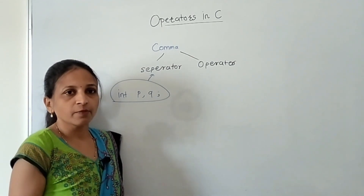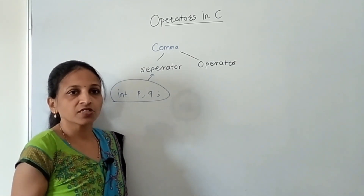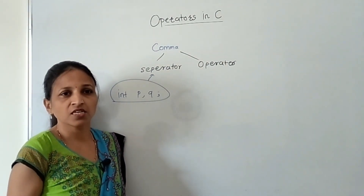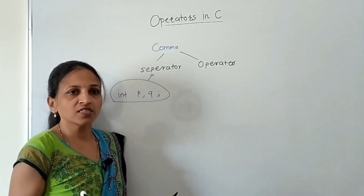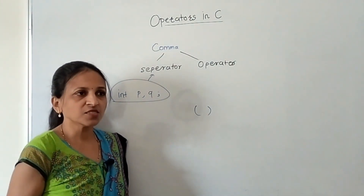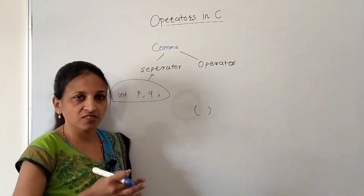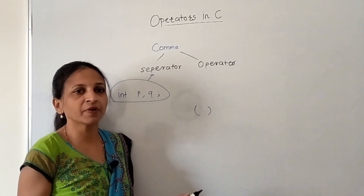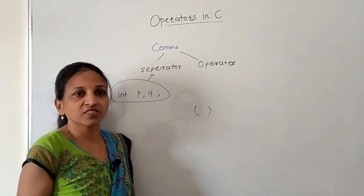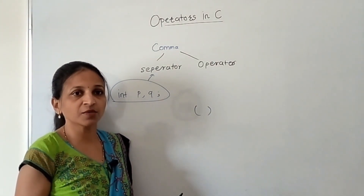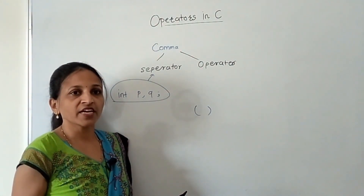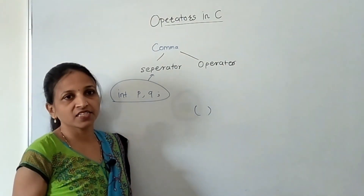The comma is a binary operator, meaning it acts on two operands, and it has the least precedence of all operators. Precedence means priority — the order in which operators are evaluated when an expression has multiple operators. The comma operator has the lowest priority.